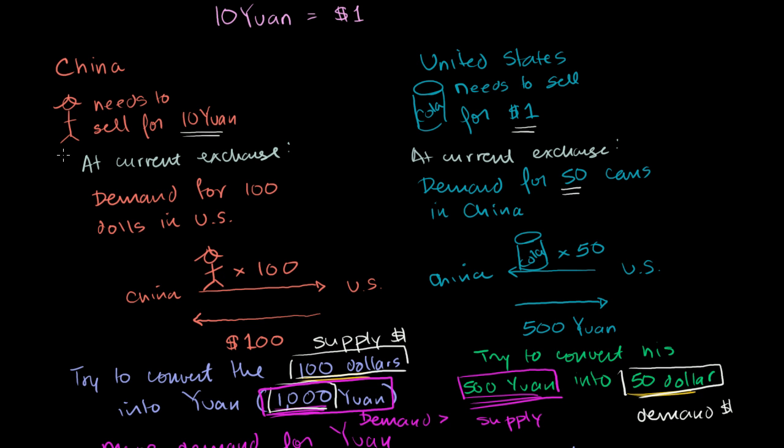In the last video, we saw a reality where the exchange rate between the yuan and the dollar started off at 10 yuan to $1. At that exchange rate, China was shipping more goods, whether measured in dollars or yuan, to the US than the US was shipping to China.